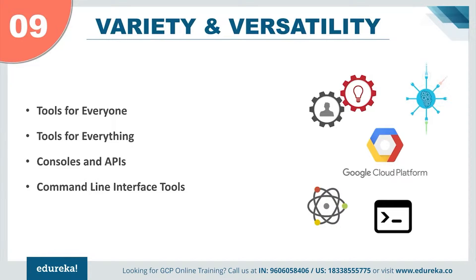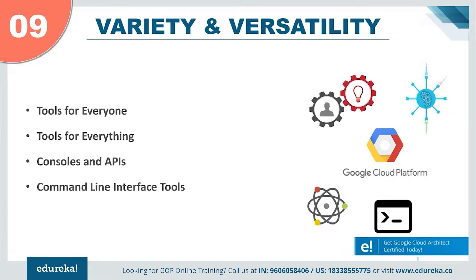Coming up to reason number nine, we have variety and versatility. Once you get started on the Google Cloud Platform, there are tools for everyone and for everything in the IT industry. You can use all these products for development like the developer's console, web UI, and the command line interface tools for Windows, Mac, or Linux. You also have the option to use the RESTful APIs — Google has its own set of managed APIs that can be used in different applications for different purposes, and they are very easy to work with.